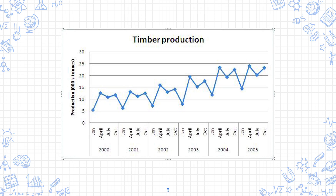Now looking at this graph, you will notice that in January there is less production every quarter, and in April there is also less production every quarter. When you see this, you ask: why is this happening? Why is production less in January and in April?